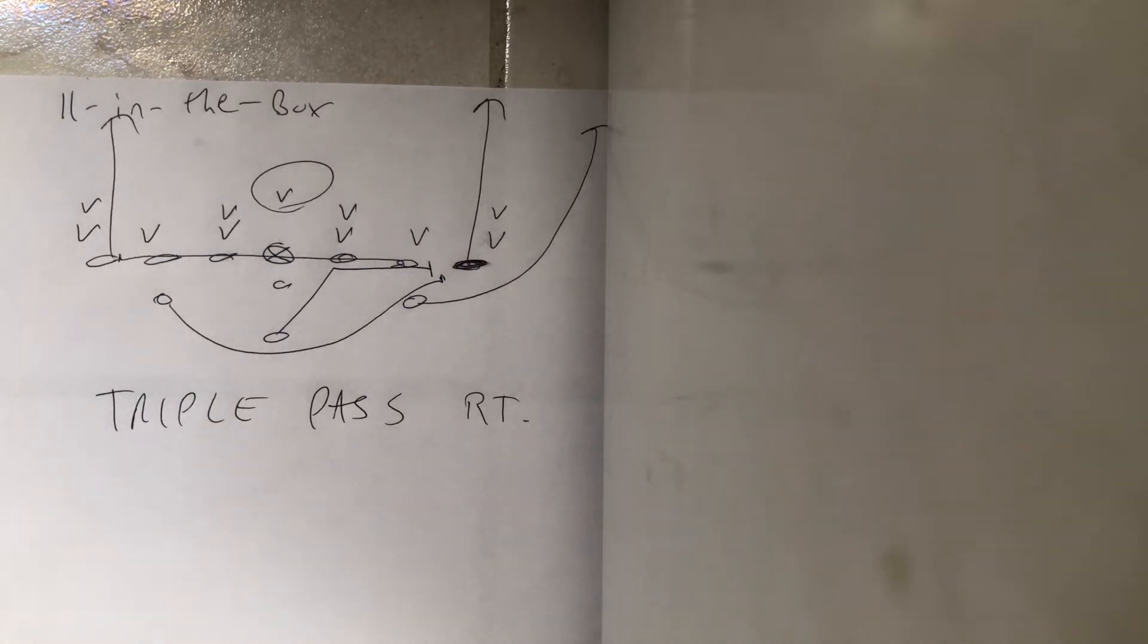It's the same thing as if the safety flew up on triple, you come back the next play and you would throw the ball, but sometimes as coaches you need to be reminded of this. So 11 in the box, it's time to throw the ball.